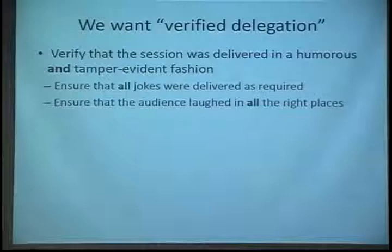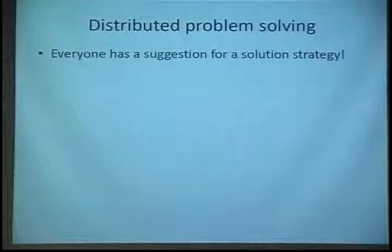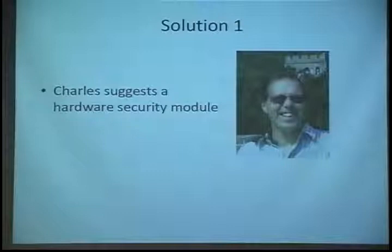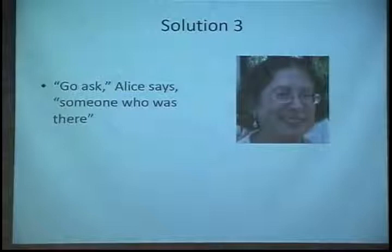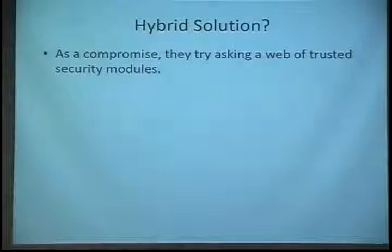All the jokes have to be delivered as required, and the audience has to laugh in all the right places and not any of the wrong places. So they polled themselves and tried to come up with a solution, and everybody had a slightly different proposal. Charles suggested using a hardware security module. Bob suggested using a web of trust. Alice just said, why don't you just go ask somebody who's there whether it was funny or not. So they couldn't really agree, and they decided to try a hybrid solution of asking a web of trusted security modules.